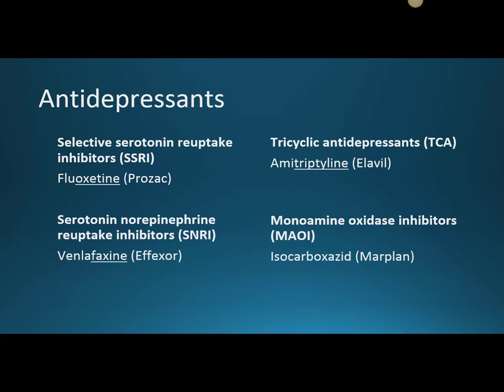And Monoamine Oxidase Inhibitors — those are the MAOIs. The example we'll use today is isocarboxazid, or Marplan. They work on monoamine oxidase, which is an enzyme in the brain that breaks down neurotransmitters like serotonin, norepinephrine, and dopamine. So if we inhibit this enzyme, we increase the levels of those neurotransmitters to treat depression.